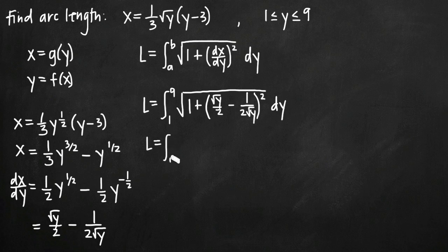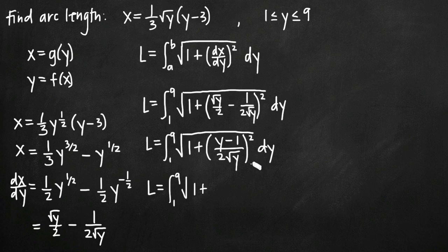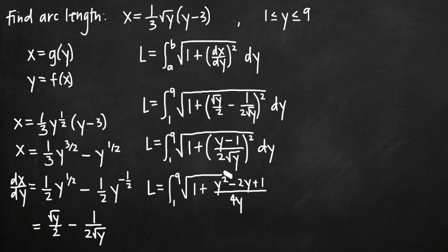We simplify inside the parentheses first by finding a common denominator. We multiply the first term by root y over root y to get a common denominator of 2 root y, giving us (y minus 1) over 2 root y. Squaring that fraction: the numerator becomes y minus 1 squared, which expands to y squared minus 2y plus 1, and the denominator becomes 4y. This all remains under the square root sign.